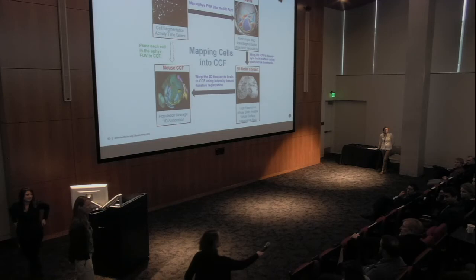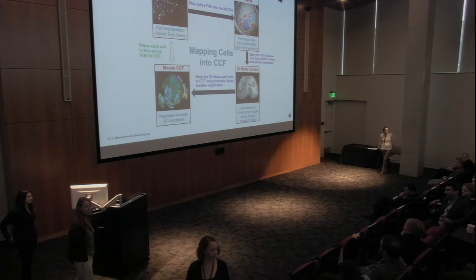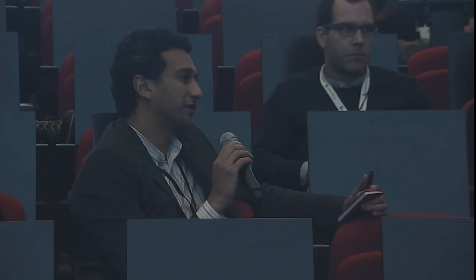A question about behavioral consistency: given that the gain of visual response changes with activity, how do you ensure the mouse is doing the same thing behaviorally? The response: there are two tracks. Behaviorally trained animals learn to run on the disc as part of training — they're in a stable state and running is monitored. Not all animals may behave perfectly, but running behavior can be tracked and correlated with neural activity. Animals in the passive viewing track are habituated but not required to run or not; their behavior is monitored and compared to neural activity.